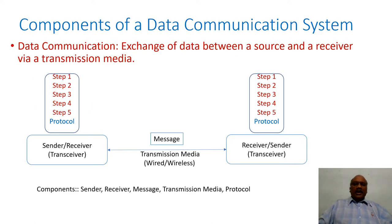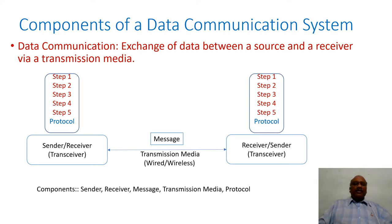What is a data communication system? It is a system which contains several components to transmit data from one place to another. In this diagram, you can understand that data is being transmitted from one end of a location to another. Basically, data communication is the exchange of data between a source and a receiver via transmission media.